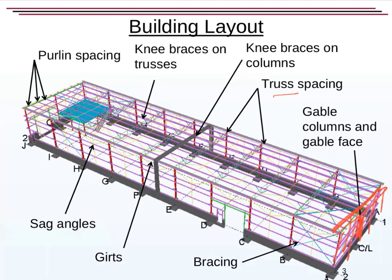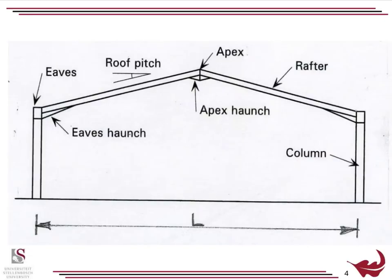You've got these things called sag angles here. The sag angles support the girts and the purlins — they prevent them from buckling. Also practically speaking, on site they prevent them from sagging while you are actually erecting the structure and putting the sheeting on. And as some other terminology, you've got your eaves, haunch, roof pitch, apex, rafter, column, etc. Some typical terminology that you may need to use in the course.